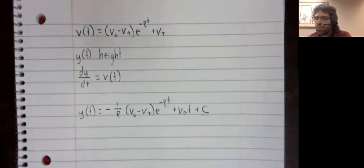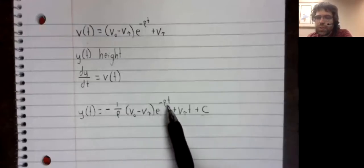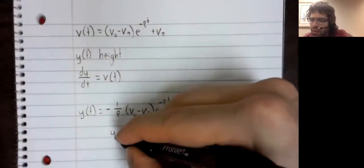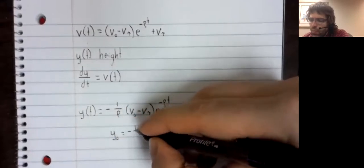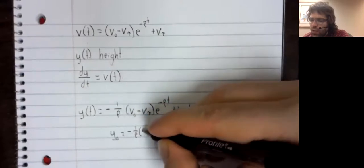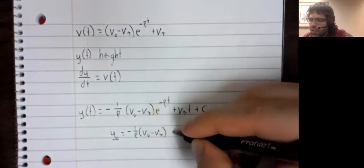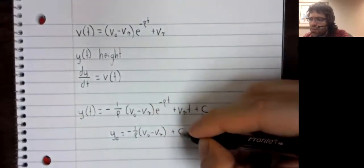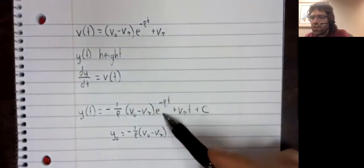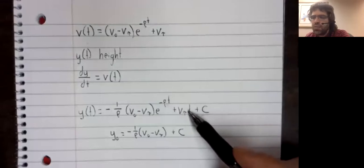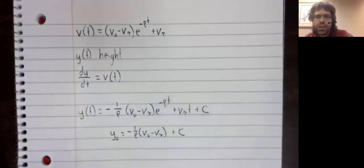We'll start by finding y sub zero. I mean, we just plug zero in for time. Y sub zero then, y sub zero is this. The exponential of zero is one. Anything times zero is zero.